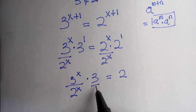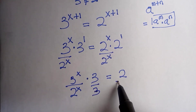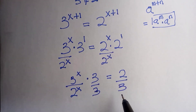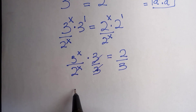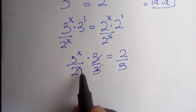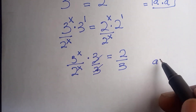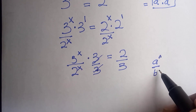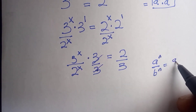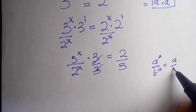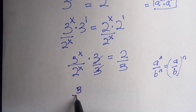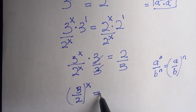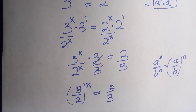Here is another law of indices: if you have a raised to the power of n divided by b raised to the power of n, this equals a divided by b, raised to the power of n. Applying it here, we get 3 divided by 2, all raised to the power of x, equals 2 divided by 3.